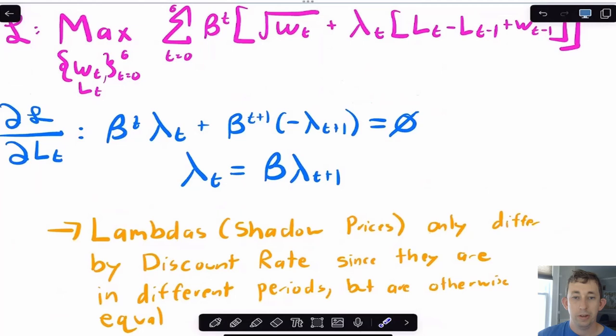We can also take the first order condition with respect to the level of water in the tank. What we're going to get is that the shadow prices should be equal to each other in every period. The only difference should be the fact that this shadow price happens in the future, so I discount it by beta. Other than the times being different, the shadow prices need to be exactly equal.